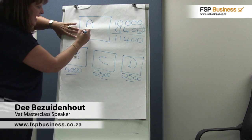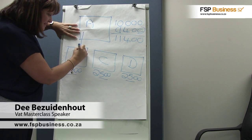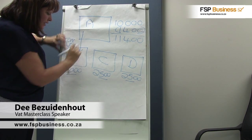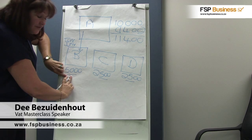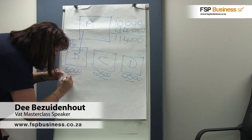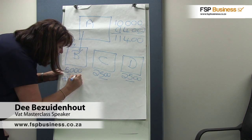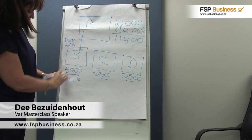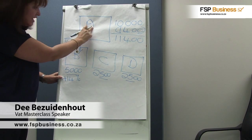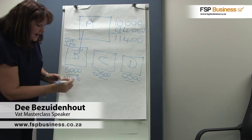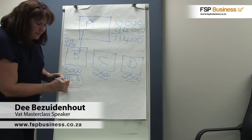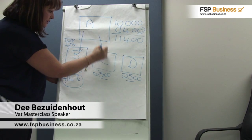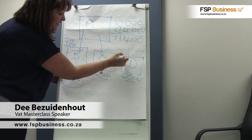So Company A is going to issue a tax invoice to Company B for the 5,000 Rand, but they are going to add new VAT at 14%. Company A pays that VAT over to SARS as output tax, and Company B can then claim it back as an input tax deduction. The same scenario is going to happen between A and C, and A and D.